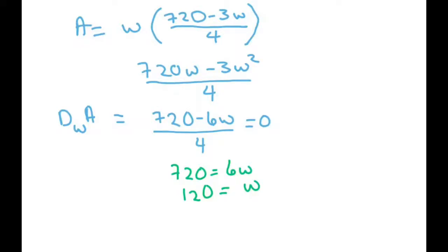And if W equals 120, you plug it back in to our equation. We have 720 equals 4L plus 3W. So 720 equals 4L plus 3 times 120. And it's 360.